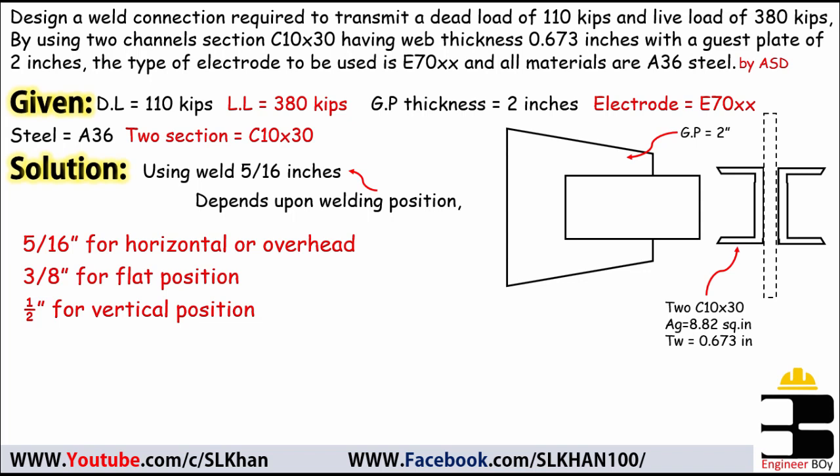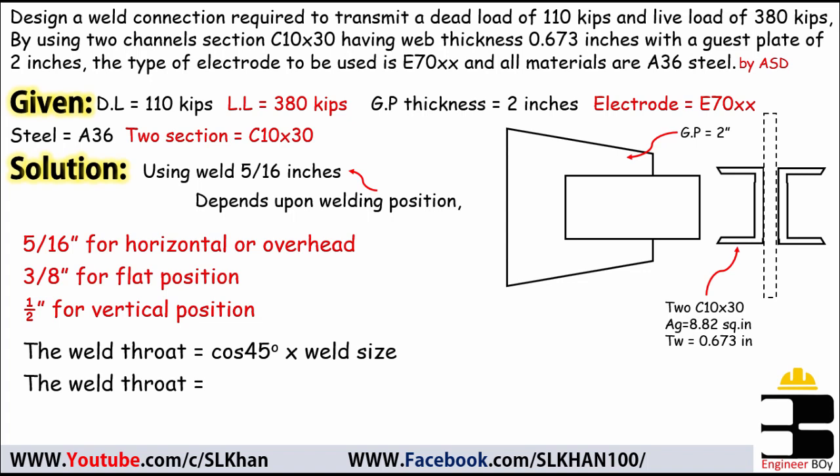With the weld size chosen, we can determine the weld throat, which equals cos45° times the weld size. The angle is 45° as standard, though it can vary (e.g., 35° or 30°). So the weld throat = 0.706 × (5/16) = 0.221 inches.